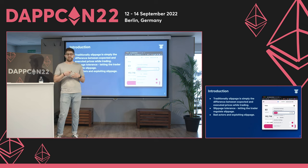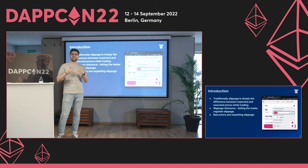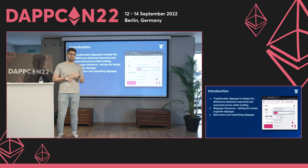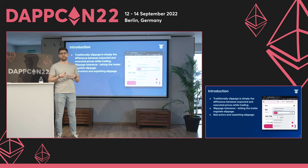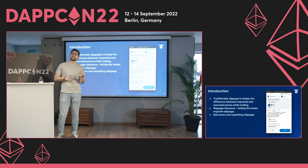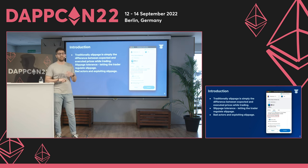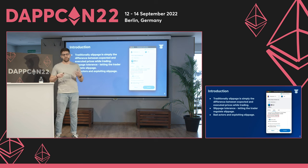This is where the slippage tolerance parameter comes in handy, because it lets you say how much less than the quoted price you're willing to accept. You can see this in every aggregator. For example, if you want to trade 0.1 ETH for 192 DAI with a slippage tolerance of 0.5%, you're saying you're willing to accept $1 less just so your trade gets executed. When you sign your transaction, you can see the minimum amount returned — in this case, 192 DAI.